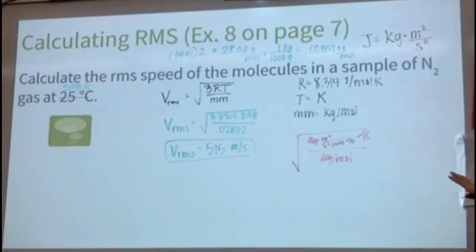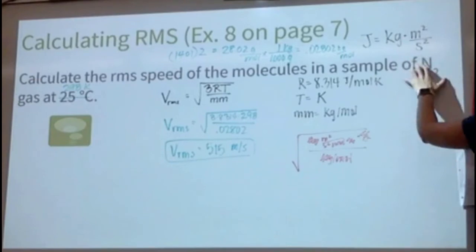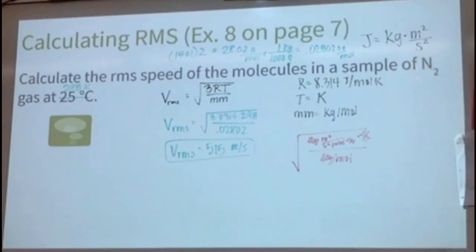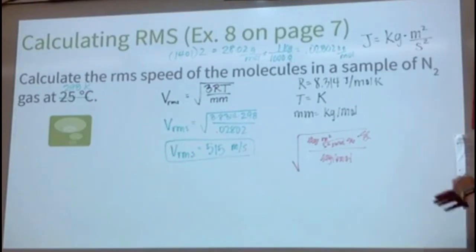Root mean squared speed is the only speed you'll have to calculate. In this case, we're assuming these N2 molecules have the same kinetic energy as the average kinetic energy.